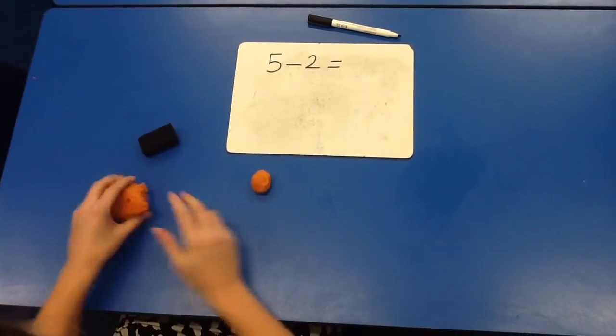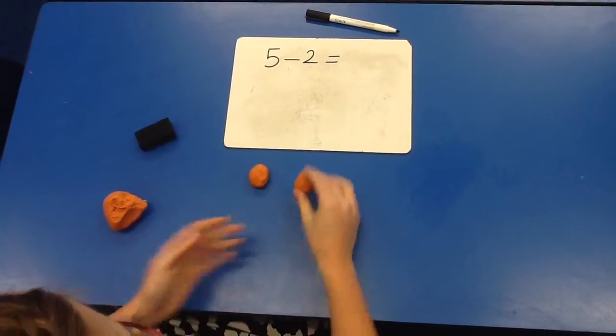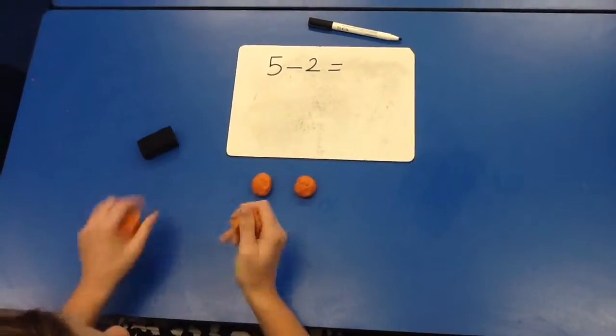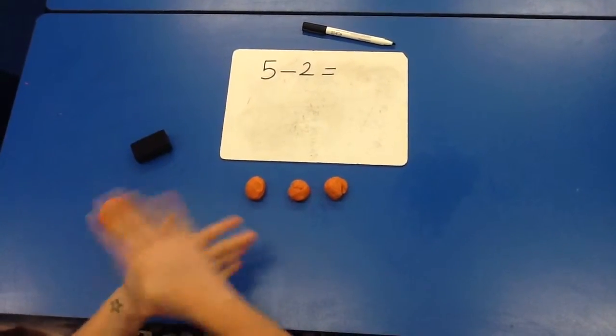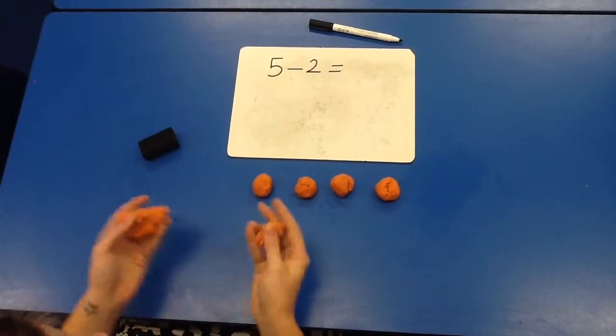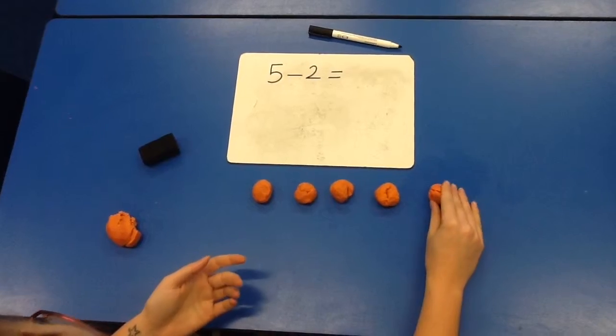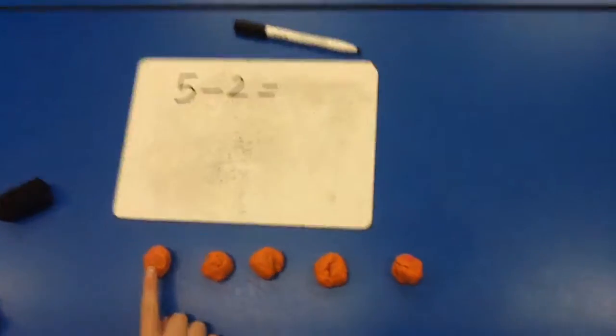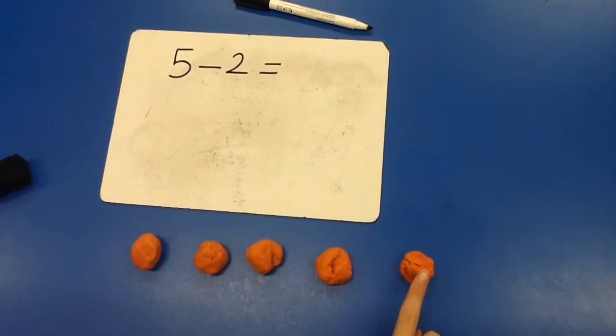This is great for your fine motor skills as you squeeze and roll the play-doh. Take your time to make sure that you are rolling 5 balls, as this is the first number in our take away. Let's check: 1, 2, 3, 4, 5.